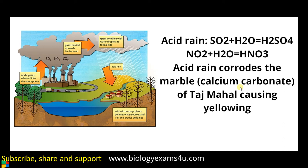Rain is normally slightly acidic because carbon dioxide combines with water to form carbonic acid, but that acidity is too low to harm organisms. When sulfur dioxide and nitric oxide combine, they form sulfuric and nitric acids that are toxic to entire ecosystems and vegetation, pollute water sources, and can even damage buildings. Notably, acid rain corrodes the marble or calcium carbonate of the Taj Mahal, causing yellowing of the structure.